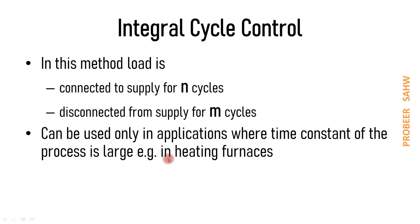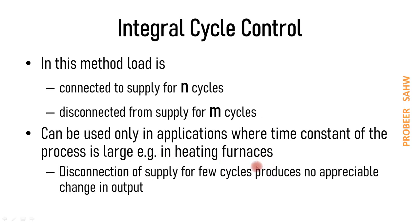A simple example is heating furnaces, because disconnection of supply for a few cycles produces no appreciable change in output — heat is a slow process so the time constant is large. Similarly, in high-speed machines, if we disconnect the motor for a few cycles, the speed will not drop appreciably. The key condition is that the time constant of the process must be large.